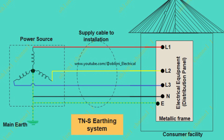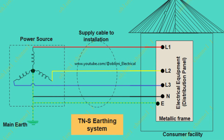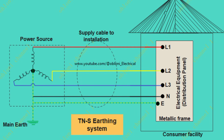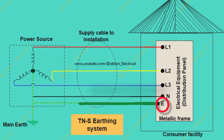In the TNS earthing system, the neutral conductor and the protective earthing conductor are separate conductors throughout the entire installation. If the earthing system provided by the power distribution authority is a TNS system, this means that you will have five wires supplied to your house: L1, L2, L3, neutral, and protective earthing. For a single-phase supply, you will have three supply cables: live, neutral, and earth. In this system, the consumer does not need to bury any earth rod for the installation — you just have to connect your earthing system to the main earth provided by the supply authority.